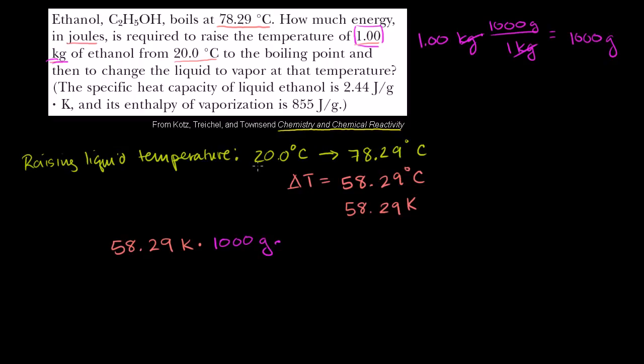We have 1,000 grams times the specific heat capacity of ethanol, 2.44 joules per gram Kelvin. And you see that the units work out. This Kelvin is going to cancel out with that Kelvin in the denominator. This gram in the numerator will cancel out with that grams. The specific heat is the amount of energy per mass per degree that is required to push it that one degree. So here we're doing 58 degrees, 1,000 grams. You just multiply it.